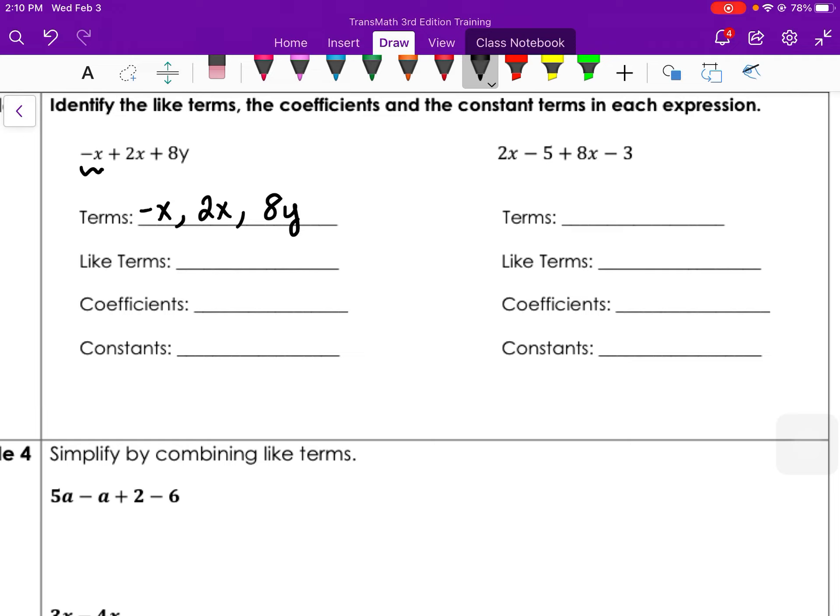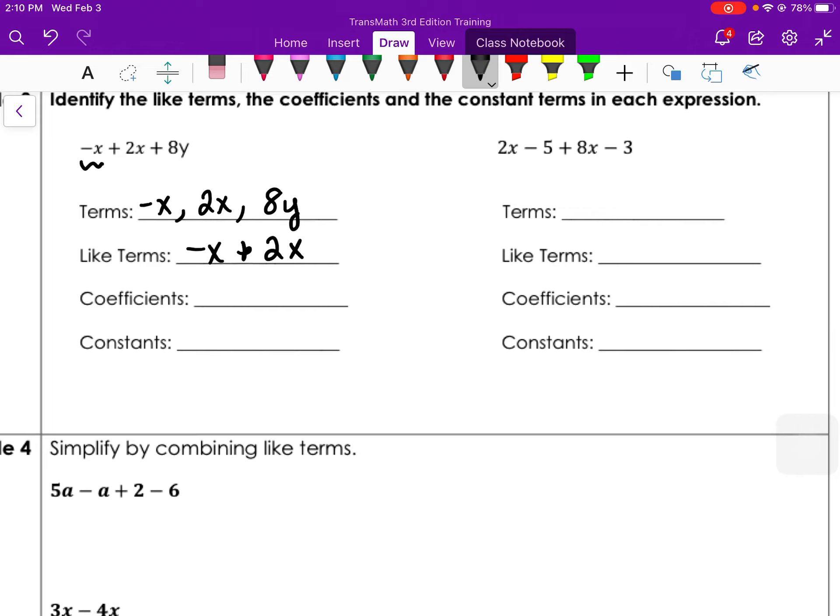The like terms are the ones with the variables that are the same. So my like terms are negative x and 2x. The coefficients are the numbers in front of the variables. With the negative x, remember that's my implied coefficient. If I have a negative x, I have a negative 1 as a coefficient. I also have a 2 as a coefficient and an 8. And then I have no constant terms in this expression.